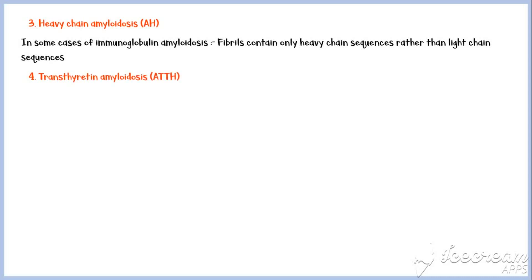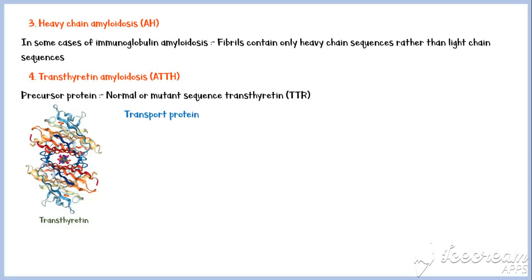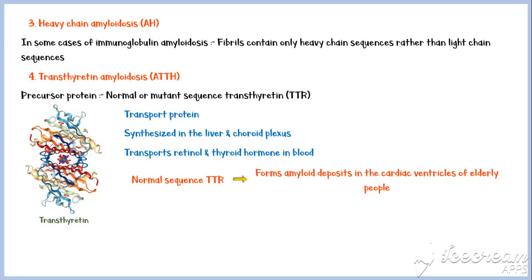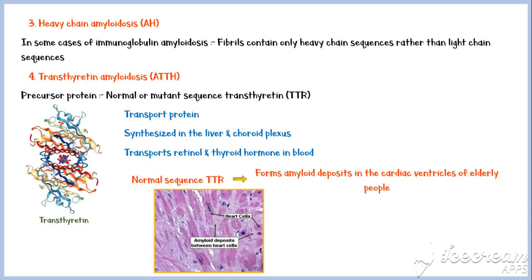Transthyretin amyloidosis is another major form of systemic amyloidosis. The precursor protein is a normal or mutant sequence transthyretin molecule. Transthyretin is a transport protein, which is synthesized by the liver and choroid plexus, that transports retinol and thyroid hormone in blood. Normal sequence TTR form amyloid deposits in the ventricles of elderly people. This type of amyloidosis was previously known as senile cardiac amyloidosis.